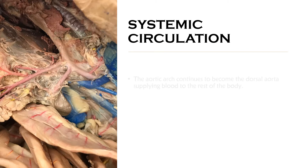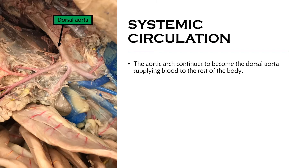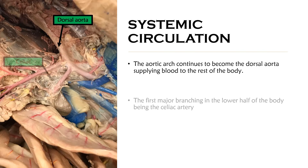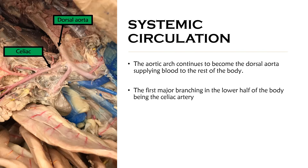Now we're looking at the lower half of the body. For context, we are looking behind both the liver and the stomach — they have been pulled to the side. The aortic arch continues to become the dorsal aorta, supplying blood to the rest of the body. The first major branch off the dorsal aorta is the celiac artery.